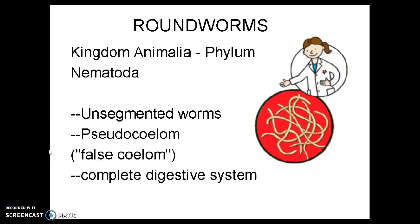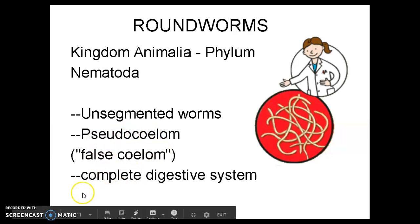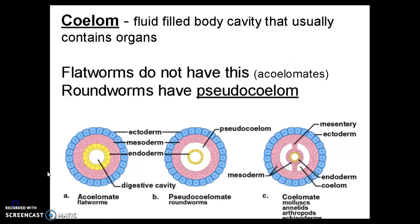Next, we have roundworms. These are all in the phylum Nematoda. They are unsegmented worms, and what they have that represent evolutionary milestones is we see the beginnings of a coelom — or a pseudocoelom — a body cavity. They also have a complete digestive system. A coelom is a fluid-filled body cavity that usually contains organs, and in order for it to be a true coelom, it has to be completely lined with mesoderm.